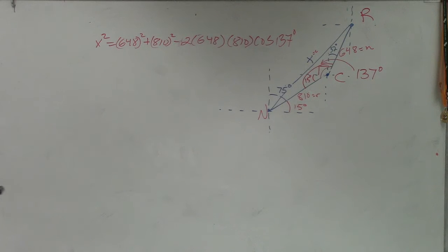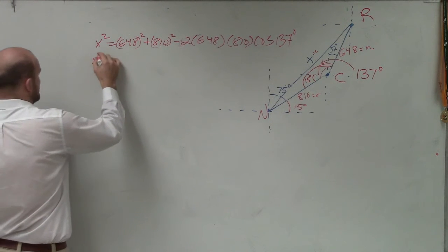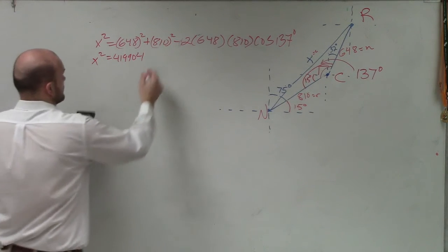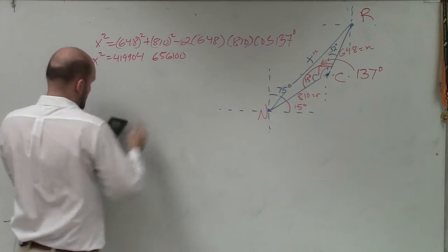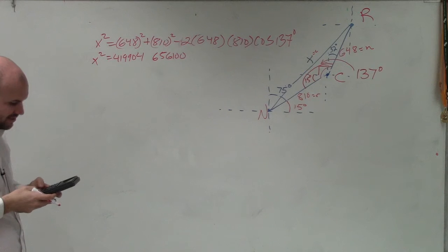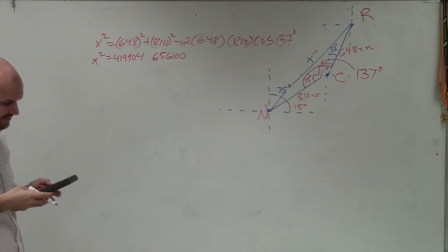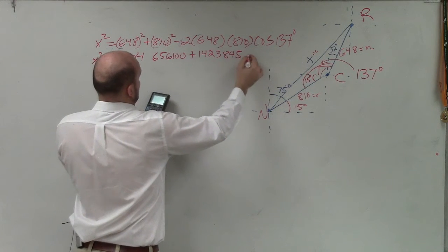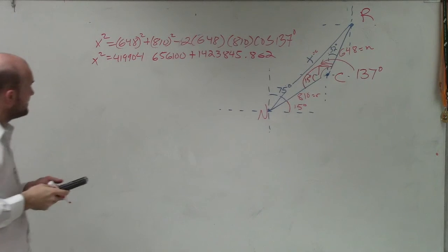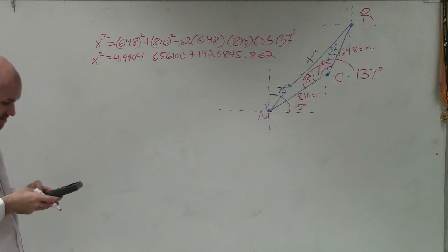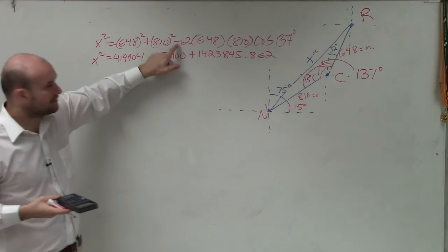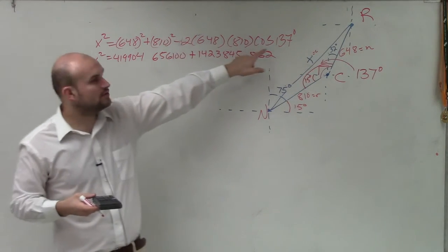So I can do 648 squared. I'll show you guys the work. So I'll do negative 2 times 648 times 810 times the cosine of 137. And that's a positive. It's a negative 2, right?